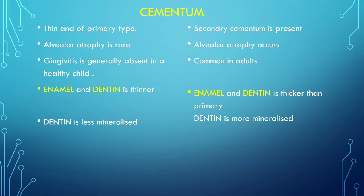Cementum is thick and of primary type in primary teeth. Primary type of cementum is also present in permanent teeth. Alveolar atrophy is rare in primary dentition but occurs more in permanent dentition.